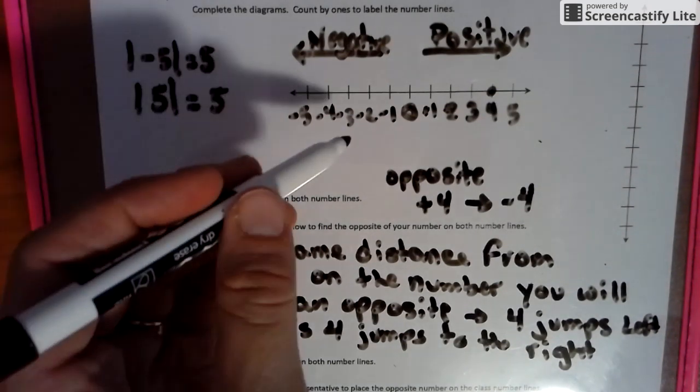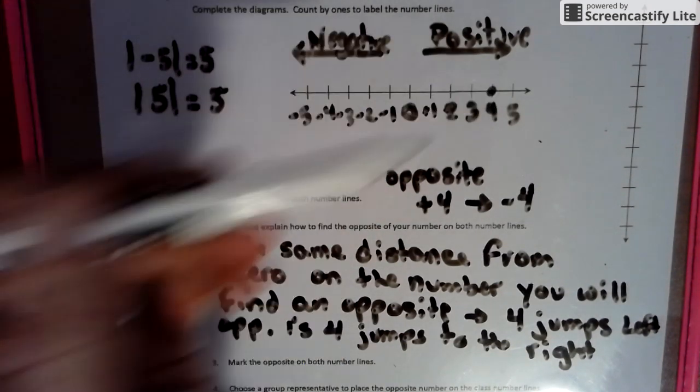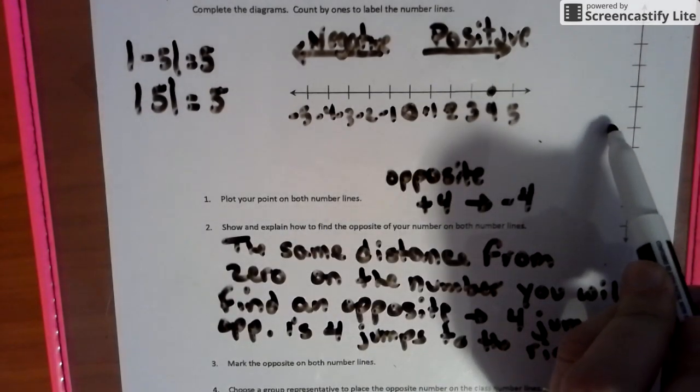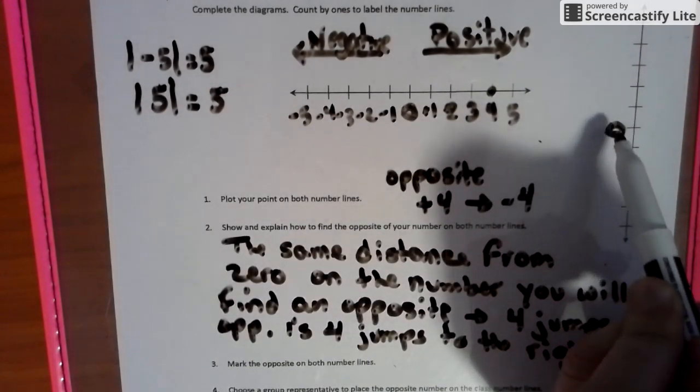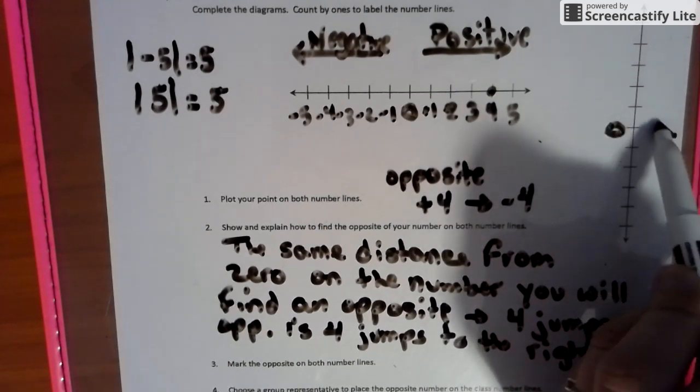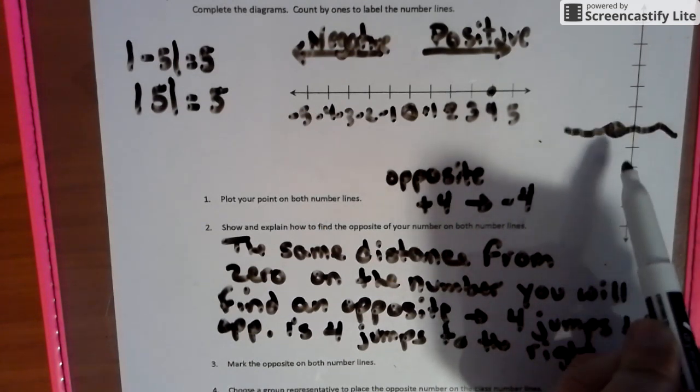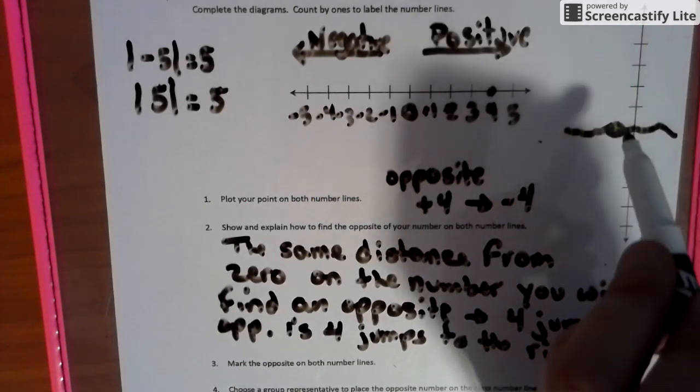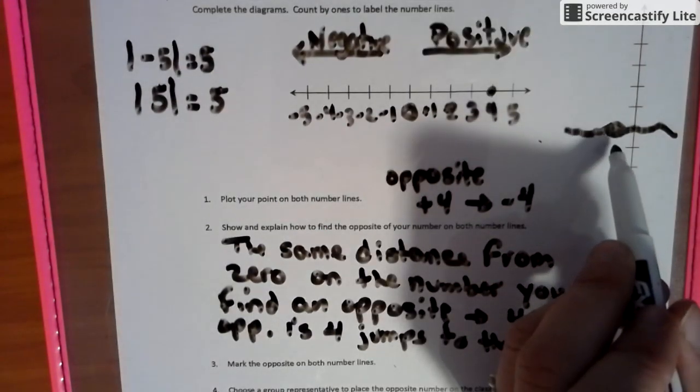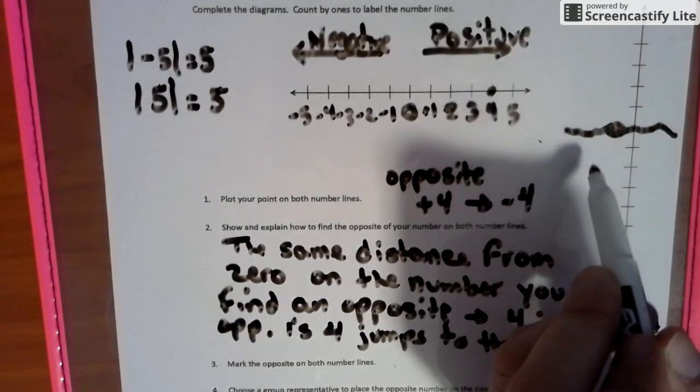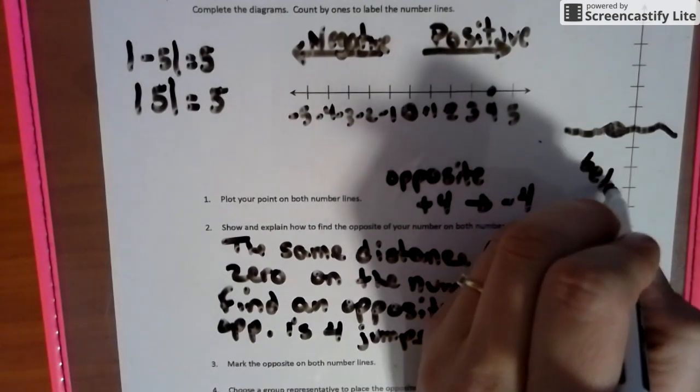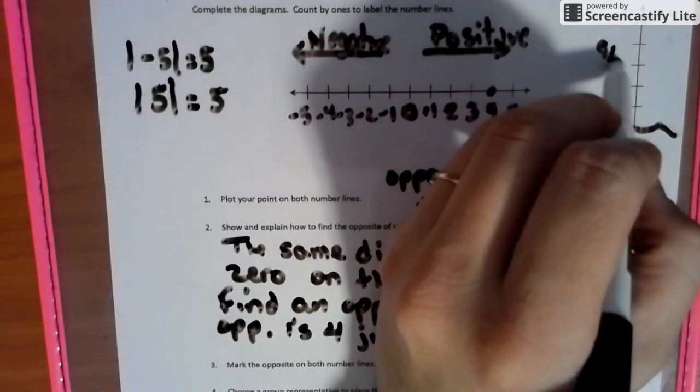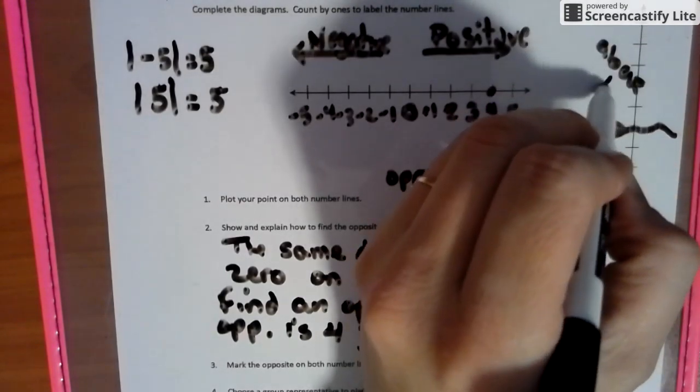So the same concept goes here. If we put zero on the vertical number line, we know we can treat this as like sea level. So anything above sea level is above sea level and anything that falls below sea level would be negative. Does that sound good? Below means negative. Above means positive.